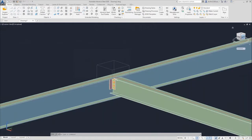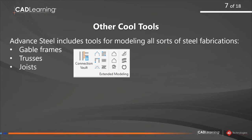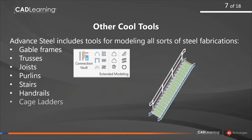Using the Advanced Steel tools is definitely the way to work with Advanced Steel connections. There's also an Advanced Steel tool to add other connections to a group. Beyond connections, Advanced Steel offers many tools: tools for creating gable frames, trusses, joists, plates, purlins, stairs, adding handrails to stairs, and even creating cage ladders and grates — anything that needs to be fabricated that may not be detailed in Revit.